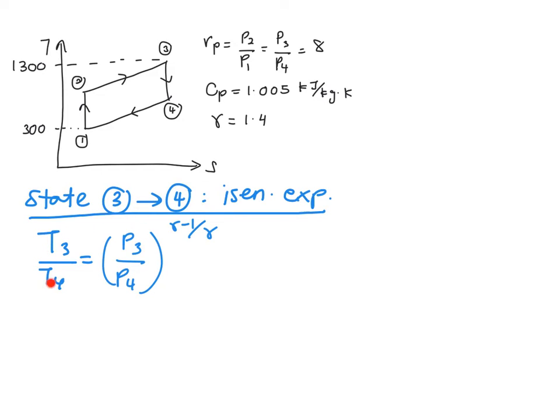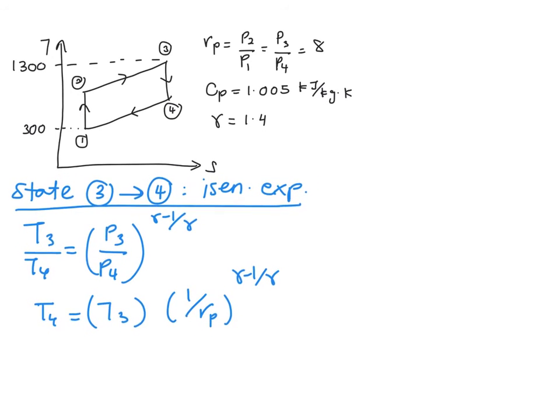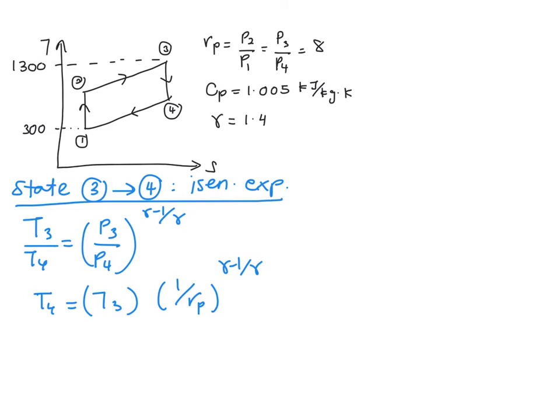If you rearrange this mathematical form and leave your T4 above, it's going to be T4 equal to T3 times the inverse of Rp to the power of (gamma minus 1) over gamma, where your Rp value is equivalent to 8. Therefore, when you plug in all the values given, which is T3 equals 1,300, you will get your answer for T4 equal to 717.66 Kelvin.